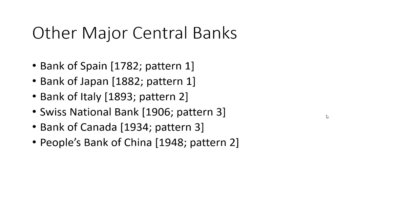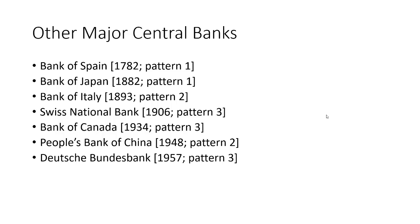China got its central bank after the Chinese communists took over in 1948 — more like a pattern two, consolidating some privately held banks, but given China's communist government, credit was explicitly directed toward the government and government-owned entities. The Deutsche Bundesbank, the German central bank, was reconstituted by the Allied powers after World War II. They set up a pattern three, Federal Reserve-style bank to be a lender of last resort, the main issuer of currency, and a macroeconomic stability institution — as late as 1957.